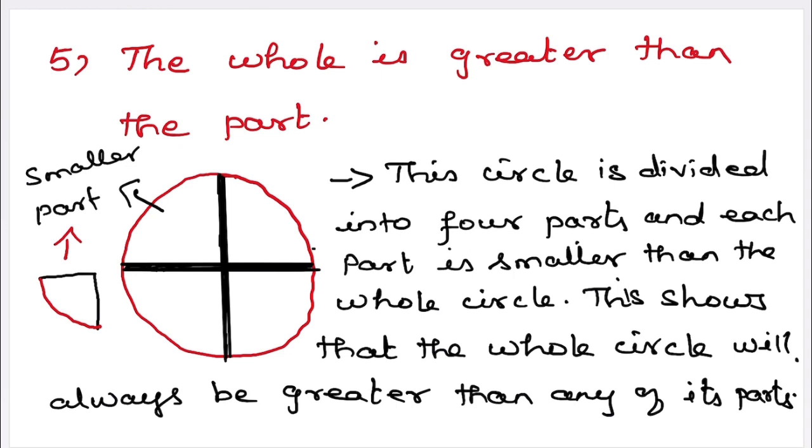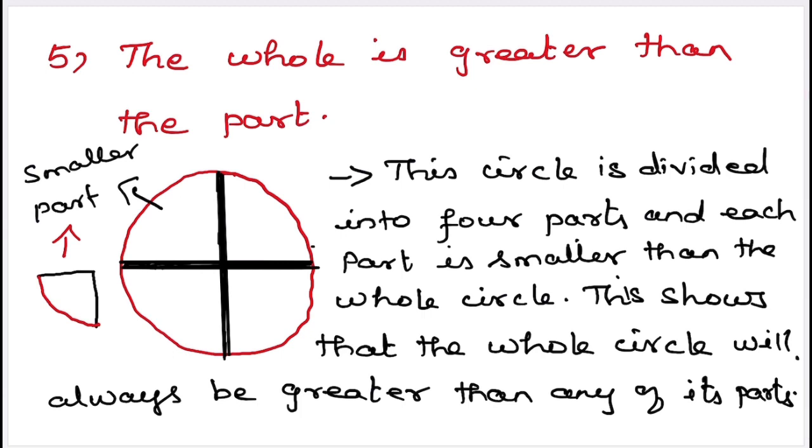That is, a circle that is divided into 4 equal parts and each part is smaller than the whole circle. So this shows that the whole circle will always be greater than any of its part.